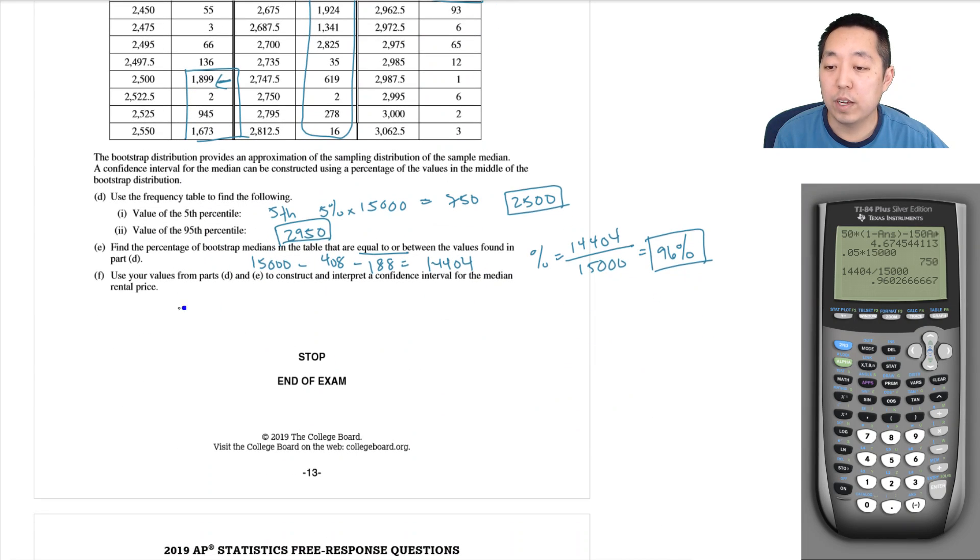Use the values of part D to construct and interpret a confidence interval for the median rental price. We would say that we're 96 percent confident that the true median is between $2,500 a month and $2,950 a month.